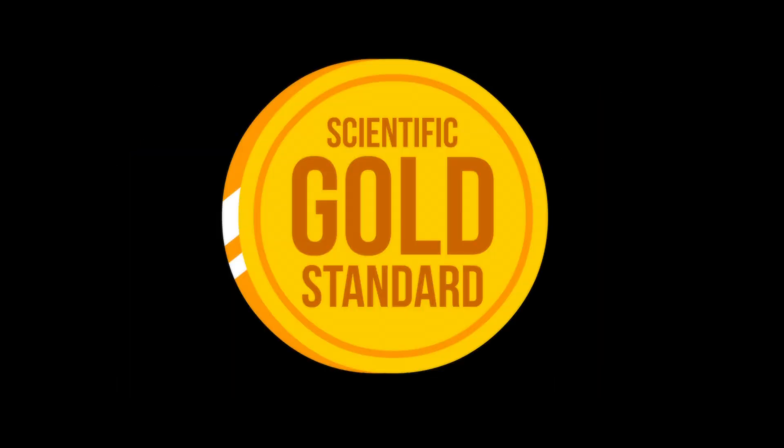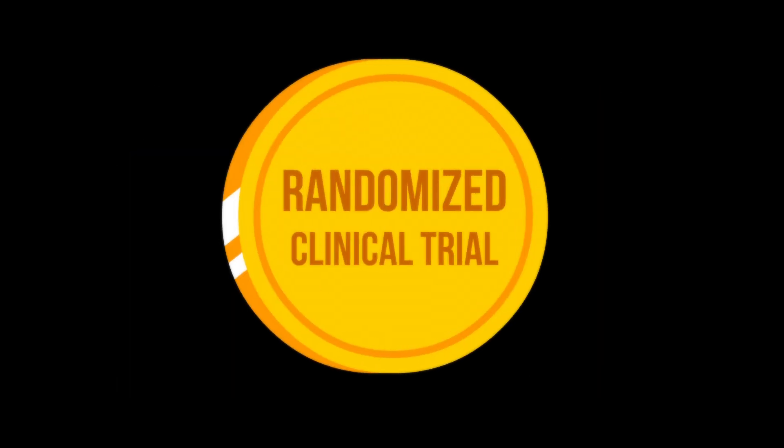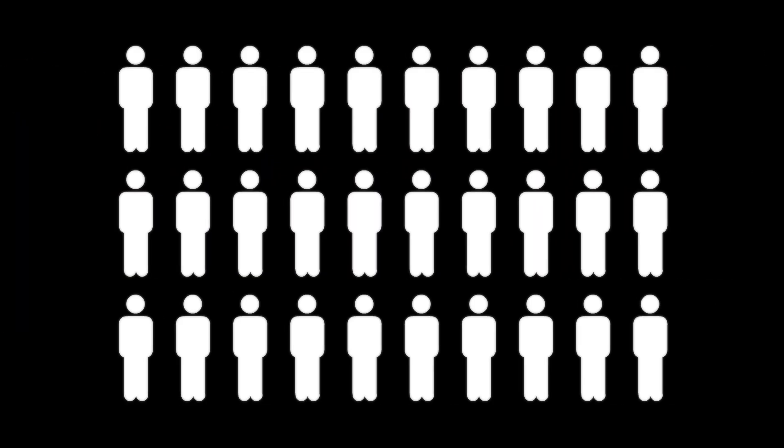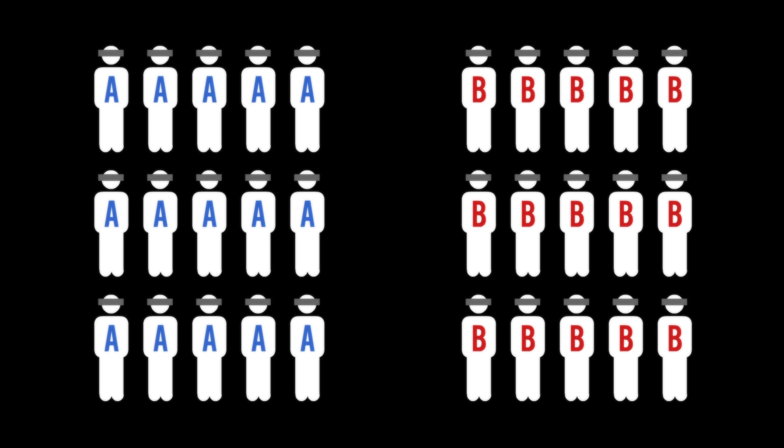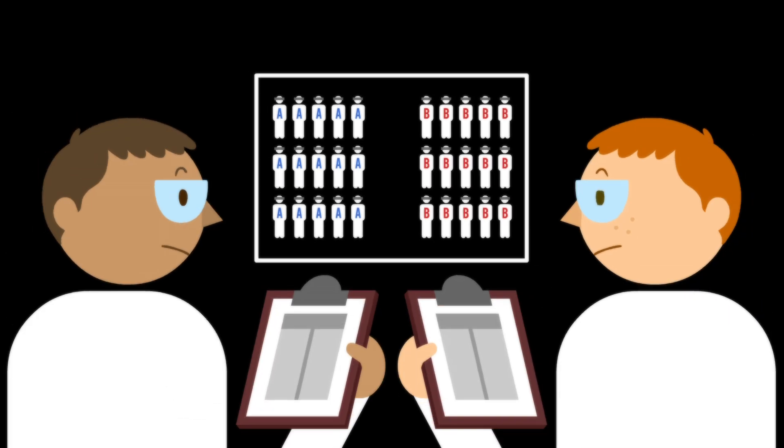And when it comes to human studies, the scientific gold standard is the randomized clinical trial, or RCT. The key to RCTs is that the subjects are randomly assigned to their study groups. They are often blinded to make them more rigorous. This process attempts to ensure that the only difference between the groups is the one the researchers are attempting to study.